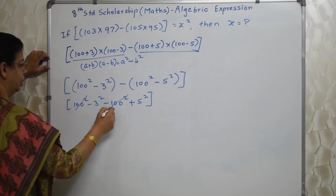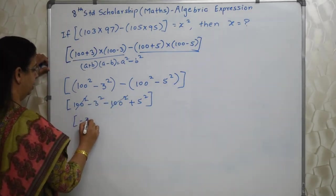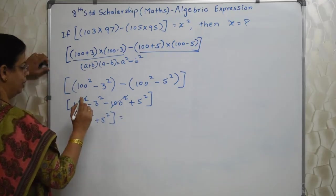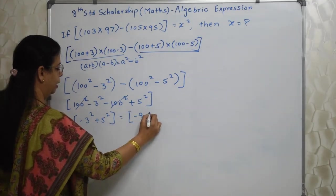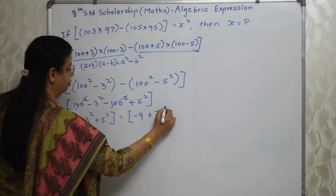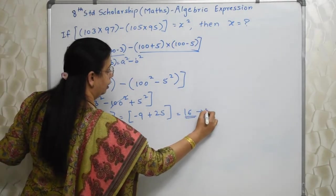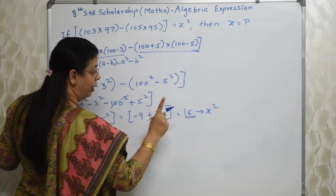Observe this. This has gone with each other. Now what we have is minus 3 square plus 5 square. Isn't it easy now? 3 square is 9 and minus. So minus 9 and plus 25. So answer is 16. This is x square they are saying.